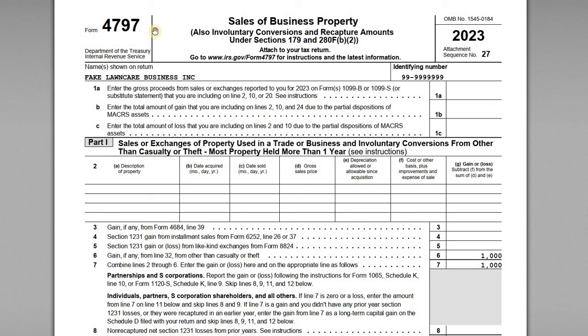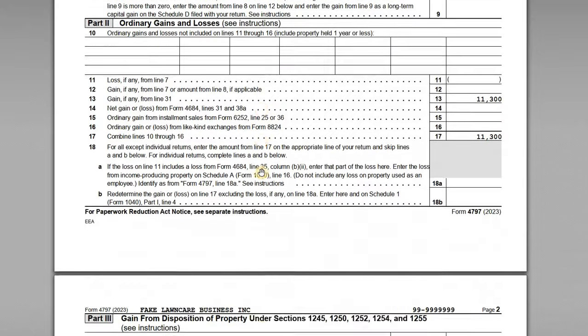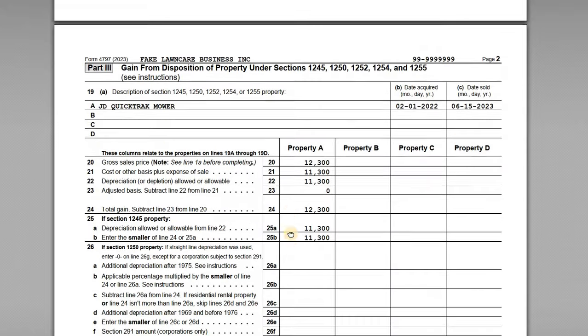For this video I want to go through a sample Form 4797 for the 2023 tax year. This is a sample 4797 going with an S corporation return, Form 1120S. In our scenario we have a lawn care business in Florida, and they need to include the 4797 because they sold one of their mowers during the year and they sold it at a gain.